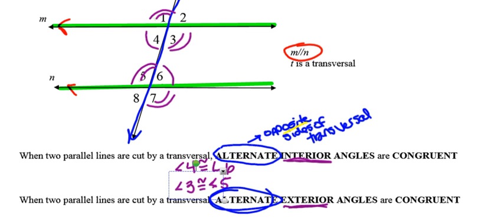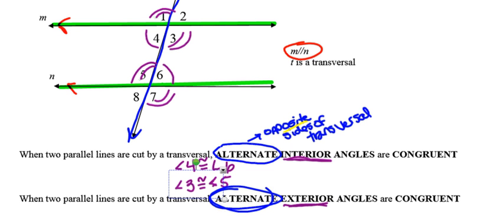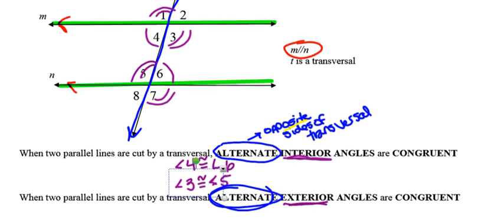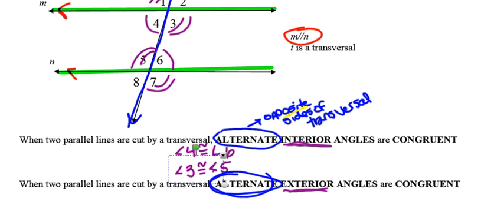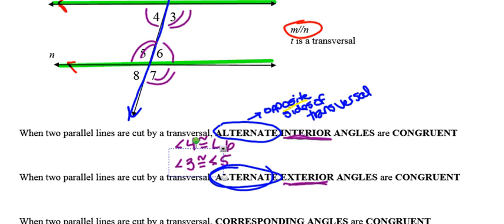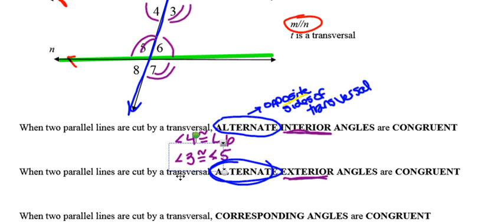All of a sudden we're getting this picture filled up with a whole bunch of different congruent angles. As far as alternate exterior angles are concerned, we have angle one congruent to angle seven, and likewise angles two and eight are also congruent to each other.